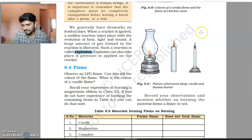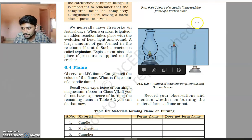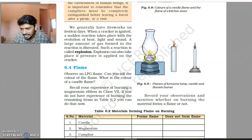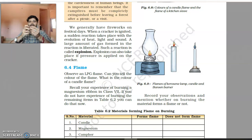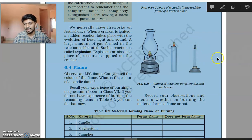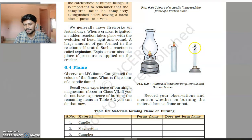Looking at this picture, this is a flame from a kerosene lamp. In a kerosene lamp, kerosene is placed in the base and a cloth wick is used; when it starts burning, the kerosene rises through the cloth and the fuel starts burning. This is similar to how a common candle works. Then we have a Bunsen burner, which produces a blue flame.